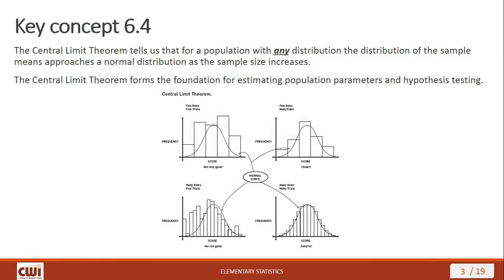The Central Limit Theorem essentially tells us that for a population with any distribution, the distribution of the sample means approaches a normal distribution as the sample size increases. Note, this is not the values of the distribution itself — this is the sample means from the distribution, and that distribution will approach a normal distribution as you increase its sample size. The Central Limit Theorem forms the foundation for estimating population parameters and hypothesis testing, which we'll be getting into in future chapters.